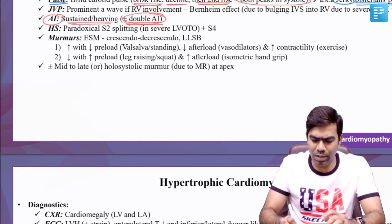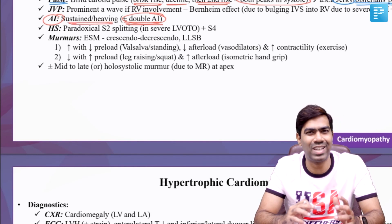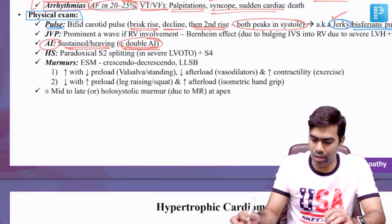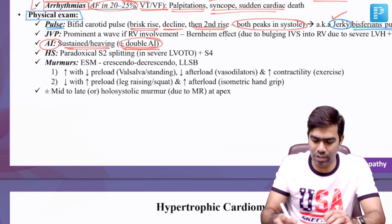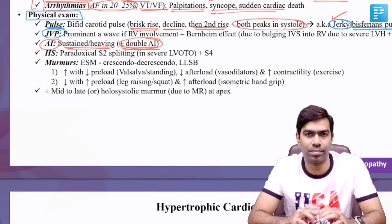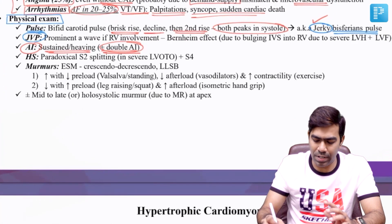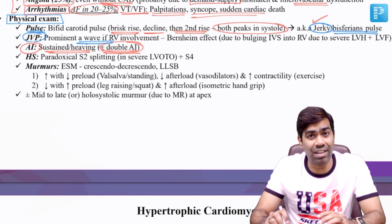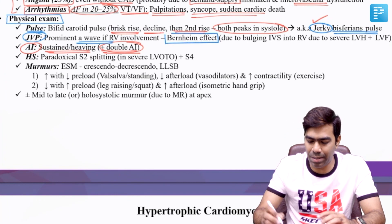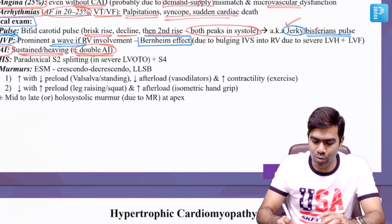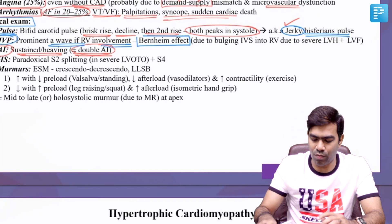In exams, whenever you see a double or triple apical impulse, go for the diagnosis of obstructive HCM. Because of LVH, the apical impulse will be of heaving or sustained character. The JVP is most often completely normal in patients with HCM, but some patients can have a prominent A-wave due to the Bernheim effect.